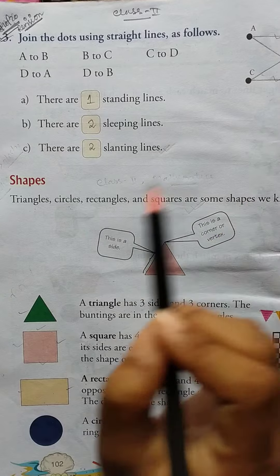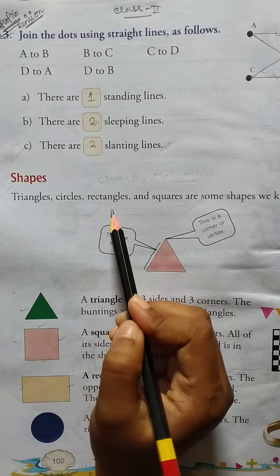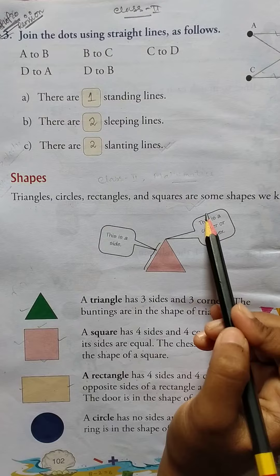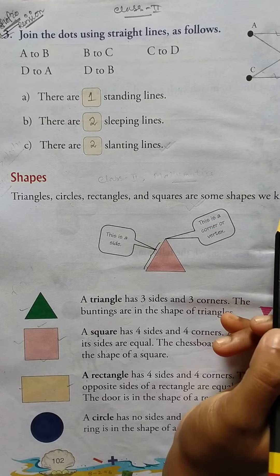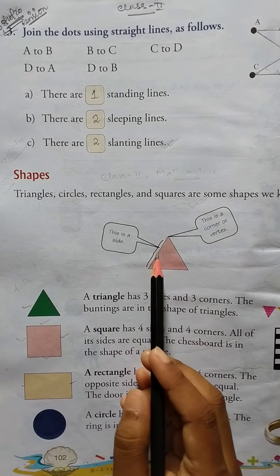Okay, then shapes. Triangles, circles, rectangles, and squares are some shapes we know. Okay, so this is a side, this is a corner or vertex.